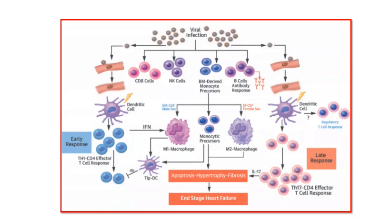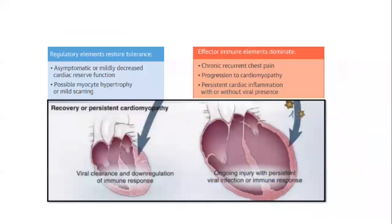After all this pathologic and immune process, it will end in one of two ways. Either the regulatory elements take over and restore the balance, the immune reaction is suppressed, leading to a mild form of the disease with mild cardiac dysfunction, possible myocyte hypertrophy, and the patient survives with virus clearing and downregulation of the immune system. On the other hand, if the effector immune cells — T helper 1, T helper 17 — and cytokine secretions take over and linger on, it leads to progression to cardiomyopathy with myocardial damage, left ventricular dilatation, depression of ejection fraction, and development of cardiomyopathy.